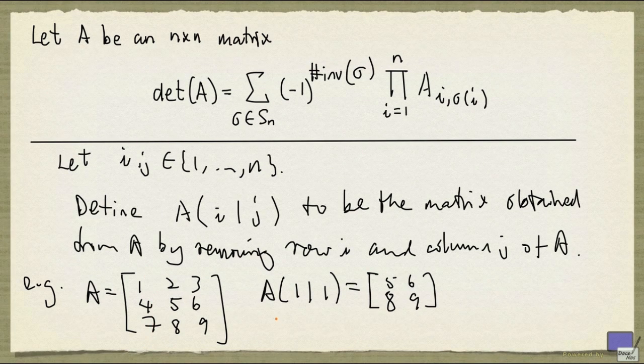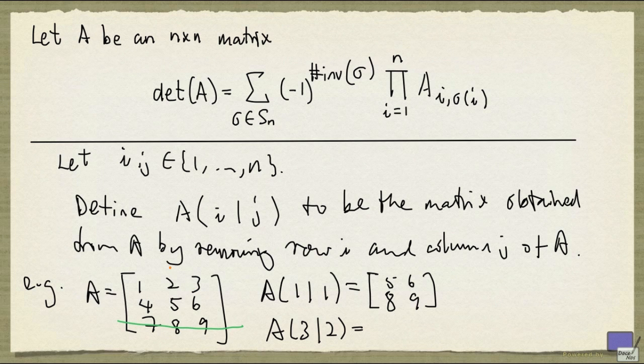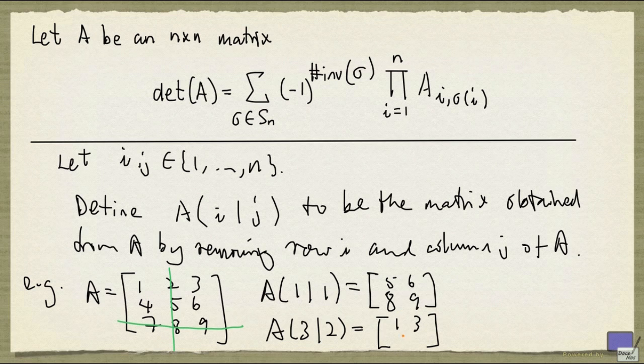Let's look at another example. This time we look at A(3|2). So I'm removing row 3 and column 2. That will leave us with the matrix 1 and 3 in the first row and 4 and 6 in the second row.